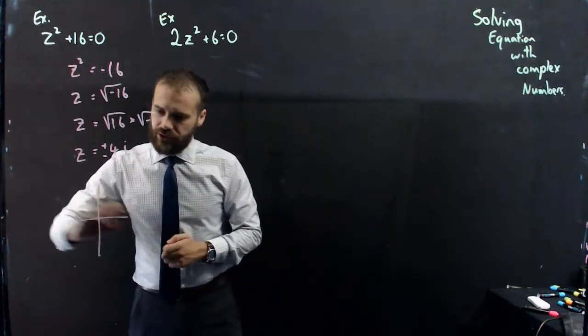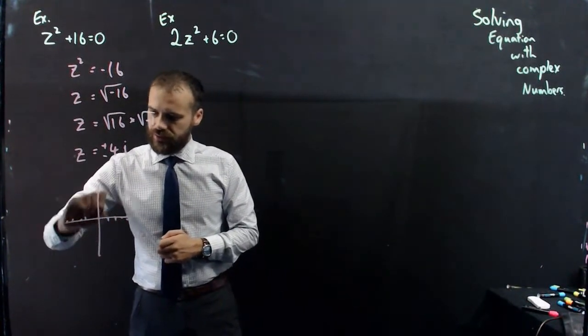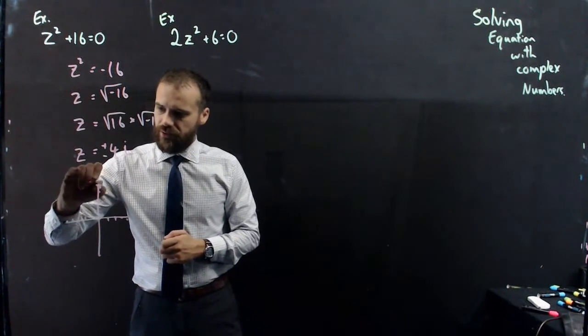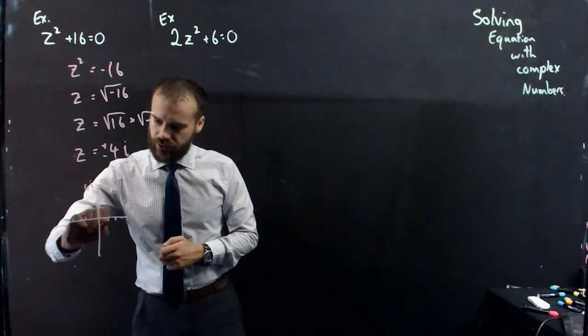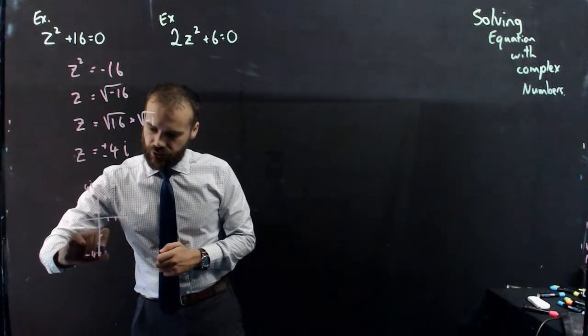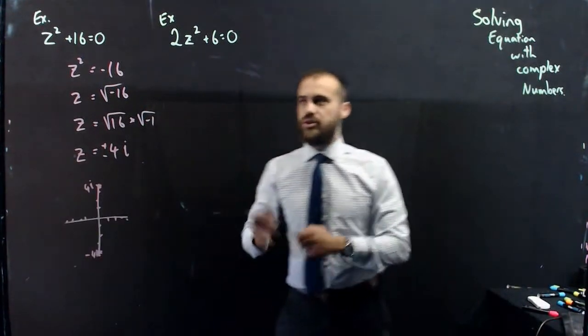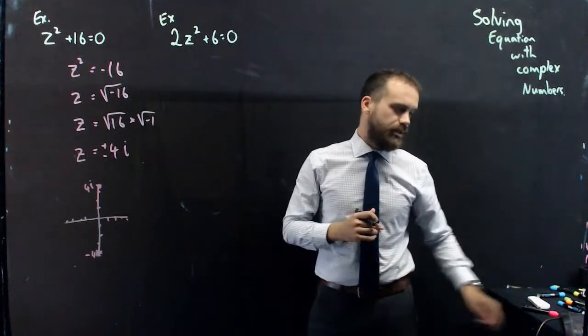I can draw an Argand diagram if I want to. There, at 4i, and 1, 2, 3, 4, at negative 4i. There are our two solutions to z squared plus 16 equals 0.